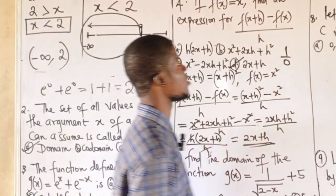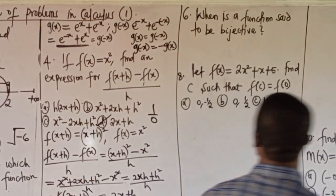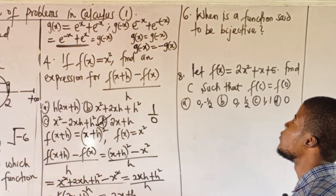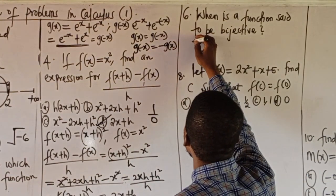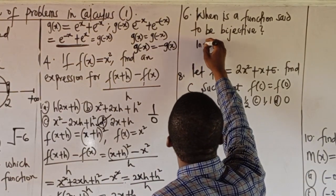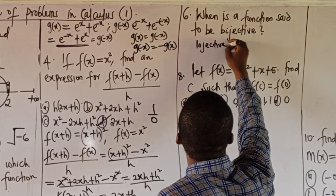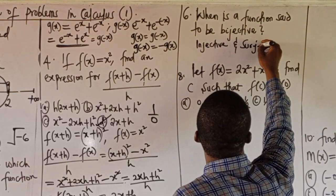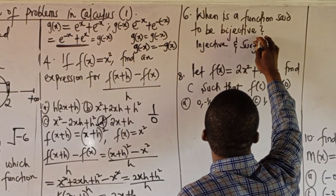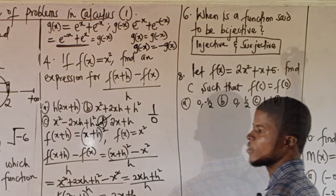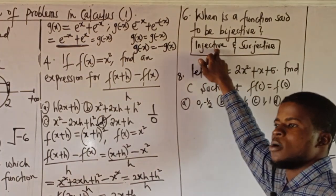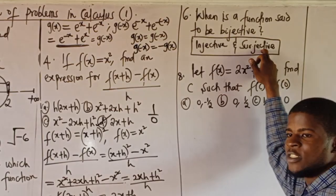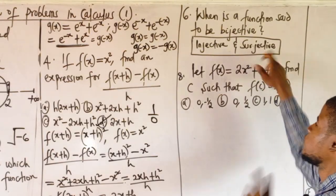Question 6: when is a function said to be bijective? A function is bijective if it is both injective and surjective — that is, both one-to-one and onto.